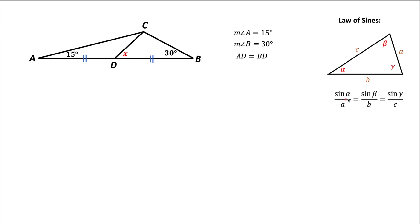So it means the sine of alpha divided by the opposite side A, equals sine of angle beta divided by the opposite side B, and equals sine of gamma divided by the opposite side C. We're going to apply this law of sines to two triangles: triangle CDB and triangle CDA.